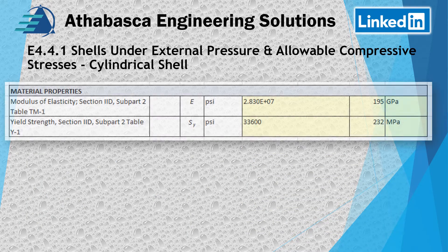Let's do some lookup tables. We go into Section 2 Part D Subpart 2 Table TM1, and for our material at that temperature, we pull out 195 GPa for the elastic modulus. Then we go into Table Y1 and get 232 MPa for the yield strength.